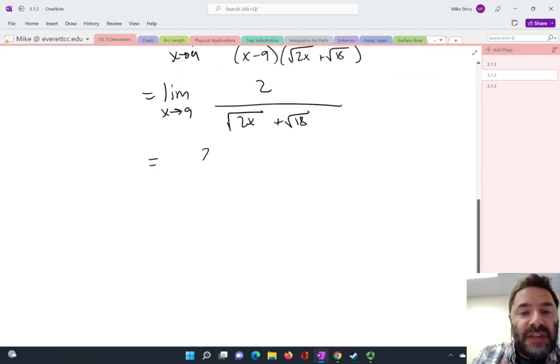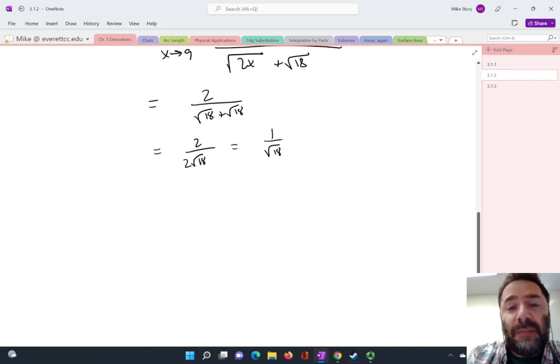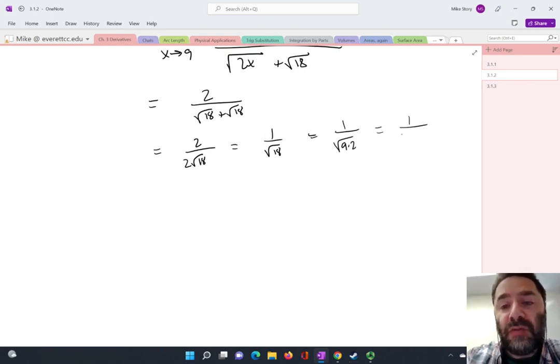So this is going to be 2 over square root of 18 plus square root of 18. Let's simplify that a little bit. That's 2 over 2 times the square root of 18. That's 1 over the square root of 18. I'm not done simplifying. That's 1 over square root of 9 times 2. So that's 1 over 3 times the square root of 2. I'm fine with that.